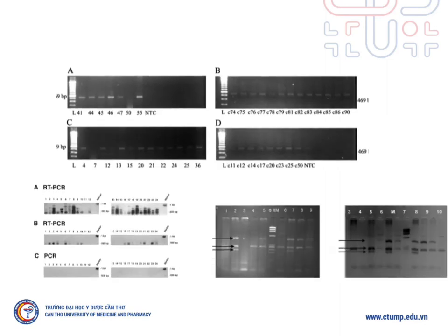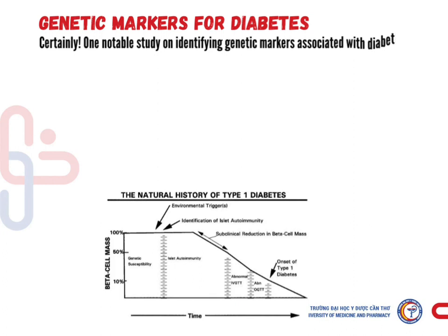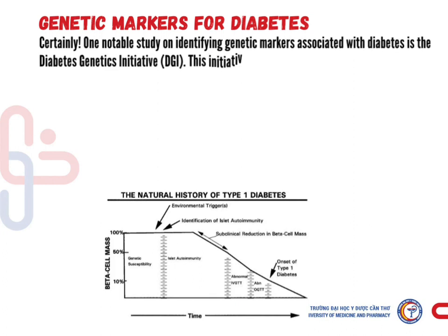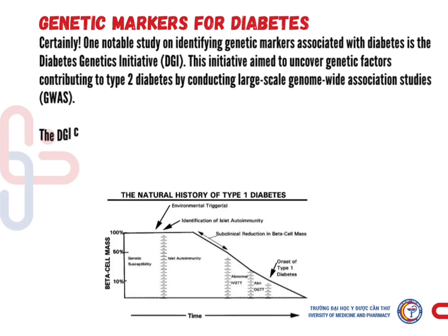These are amplified genes of diabetes. Genetic markers for diabetes: one notable study on identifying genetic markers associated with diabetes is the Diabetes Genetic Initiative. This initiative aims to uncover genetic factors contributing to type 2 diabetes by conducting large-scale genome-based studies.